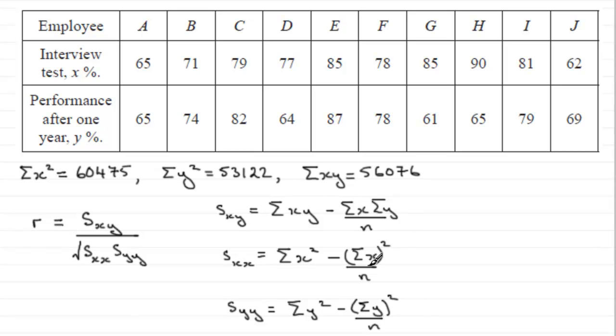So, we need to work out these particular values. Now, you'll notice that we've got sum of XY, sum of X squared, sum of Y squared up here already given. But what we haven't got is sum of X and sum of Y.